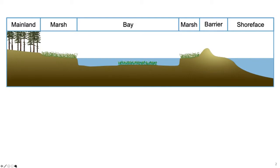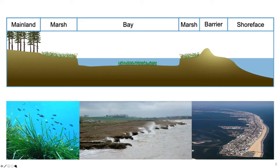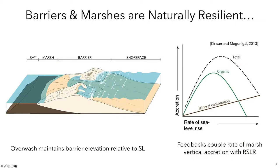Barrier marsh systems consist of a barrier island separated from the mainland by salt marsh and shallow bay, and they're especially valuable both economically, being often heavily populated. It's one of the most productive and diverse ecosystems known. But the low relief of these landforms often results in a very dynamic system that is vulnerable to sea level rise changes and intense storms. Barrier islands tend to migrate upward and landward to maintain their subaerial exposure through the process of overwash, where sediments eroded from the shoreface and beach are transported landward of the dune crest during storms.